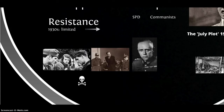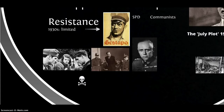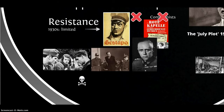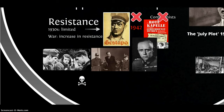Resistance to the Nazis was fairly limited in the 1930s, mainly due to the effectiveness of the Gestapo. Fear of the Gestapo and their web of informers meant the Gestapo had essentially crushed any resistance offered by the Social Democrats and the communists, with the exception of a communist resistance group called the Rotkepel — the Red Orchestra — which wasn't finally extinguished until 1942. During the war, there was an increase in resistance to the Nazi regime from a variety of groups with different backgrounds and motivations.